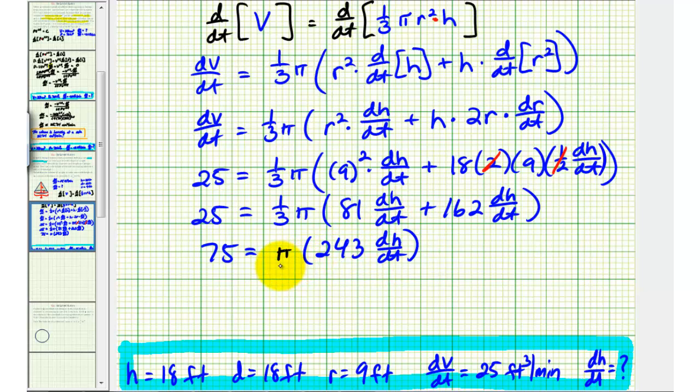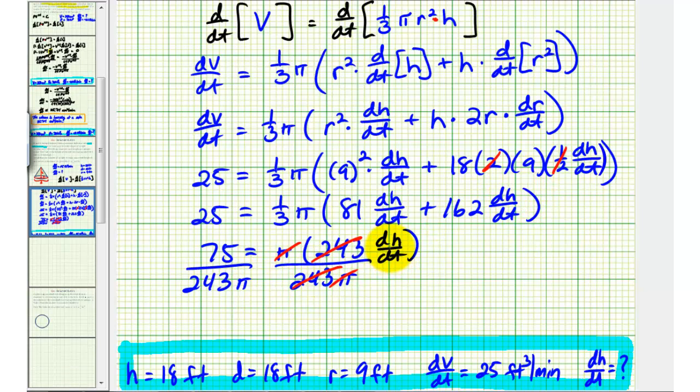So to solve for dh/dt, we'll divide both sides by 243 pi. So pi over pi simplifies to one. Again, 243 over 243 simplifies to one. Notice how we now have this solved for dh/dt.